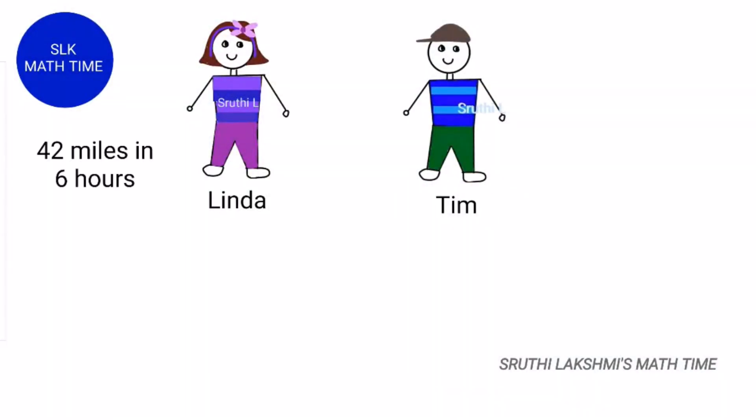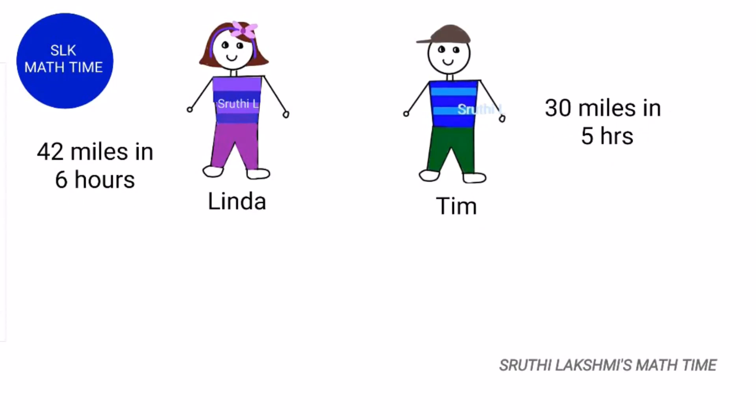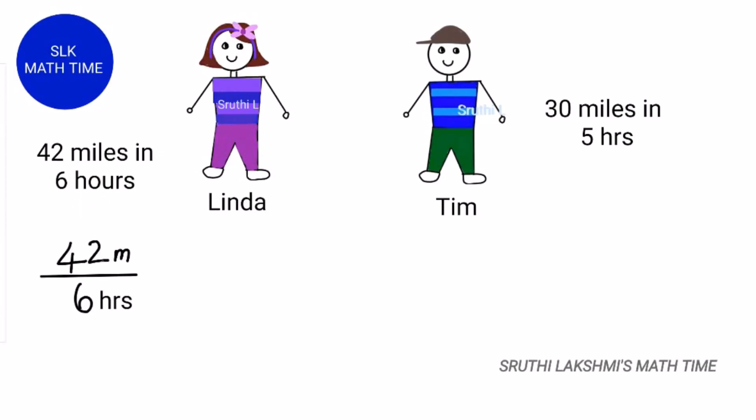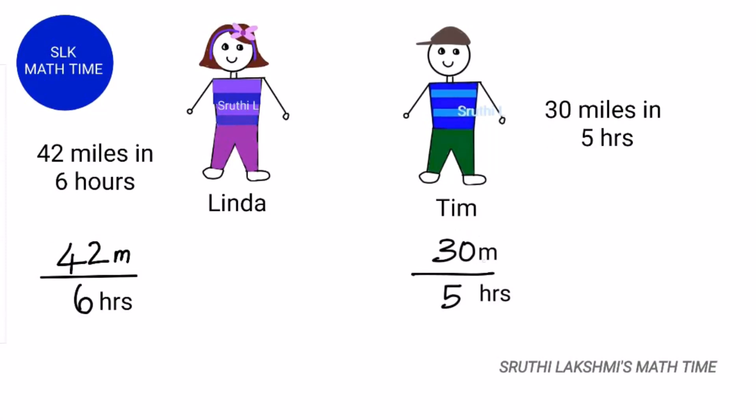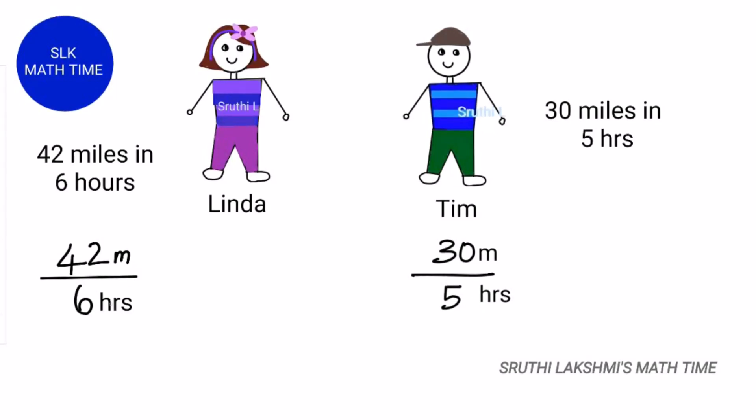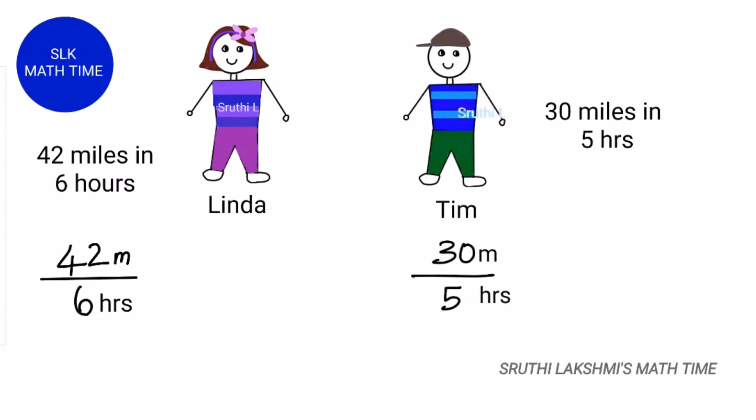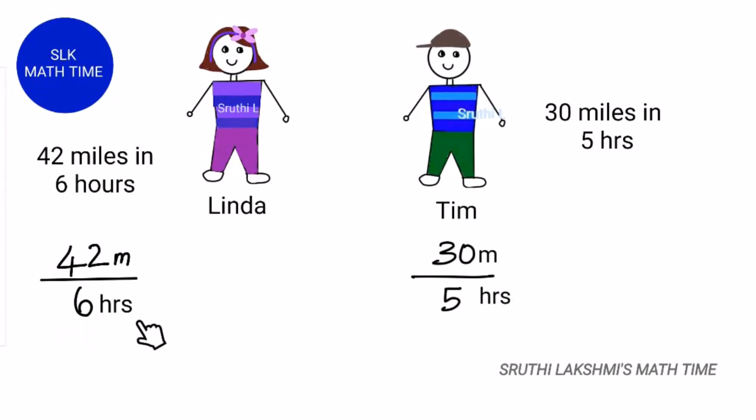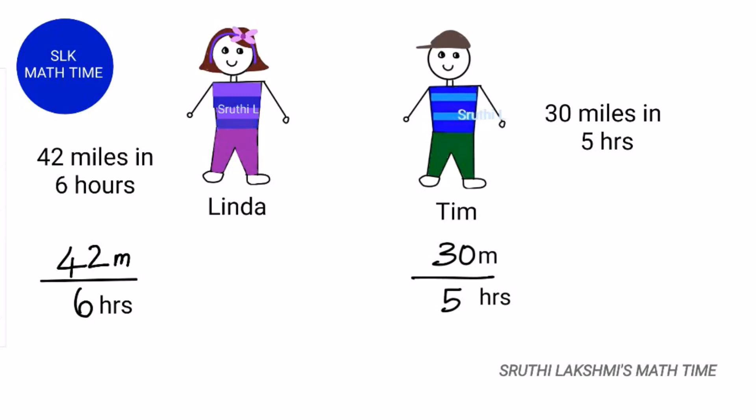Linda jogs 42 miles in 6 hours and Tim jogs 30 miles in 5 hours. 42 miles in 6 hours can be written as a ratio 42 by 6 and 30 miles in 5 hours can be written as 30 by 5. Since both denominators are different, we can't compare them straight away. We have to convert them into unit rate. Unit means 1.